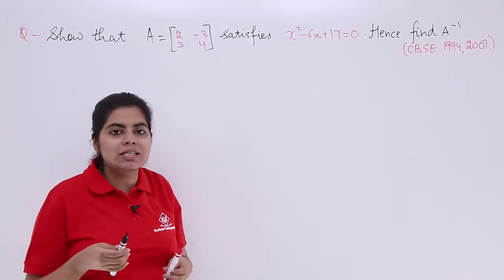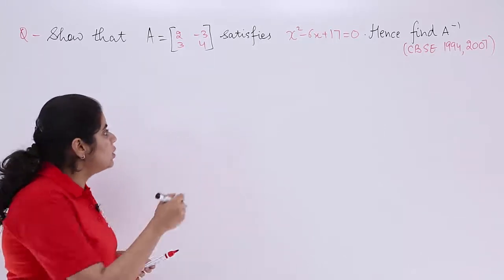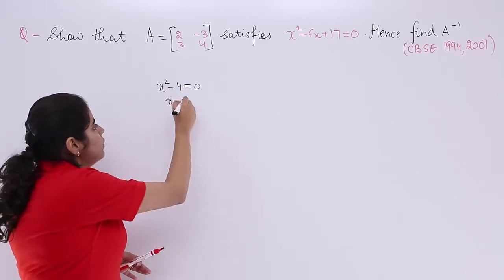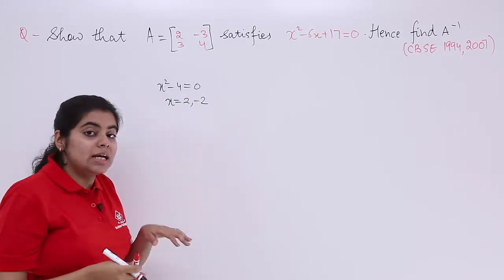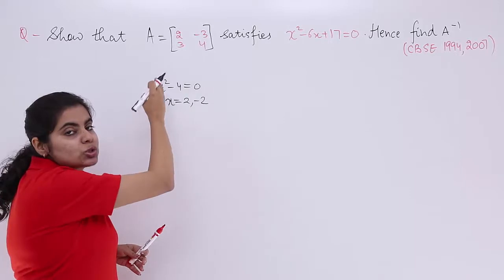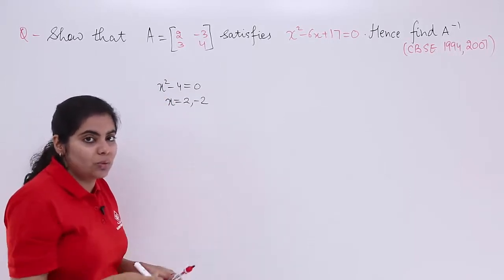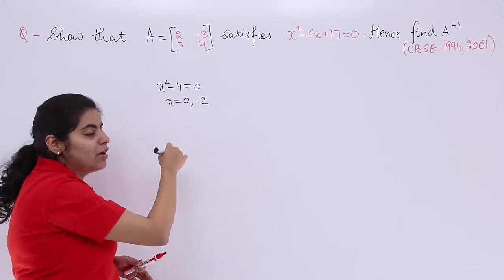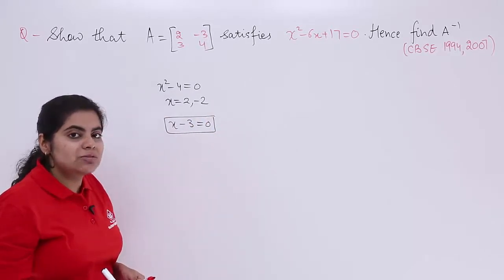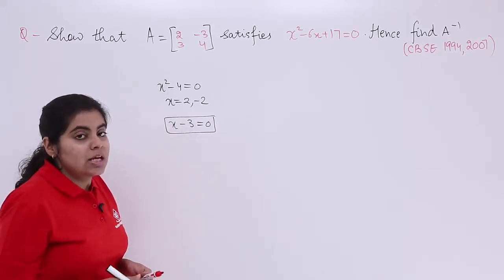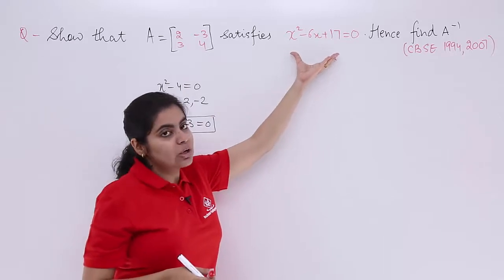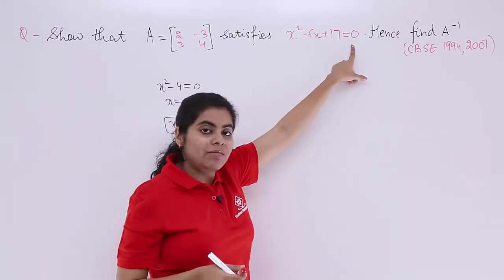Remember, in junior classes we studied polynomials and equations. For example, x² - 4 = 0 is satisfied by x = 2 and x = -2, because substituting 2 gives 2² - 4 = 0. That is the meaning of an equation being satisfied by a value. Similarly here, we have to prove that the matrix satisfies this equation — put the matrix in and check whether the result is zero.